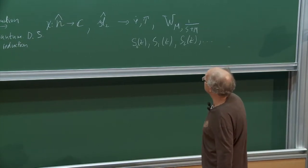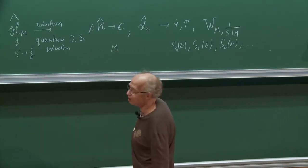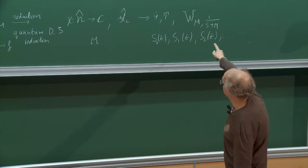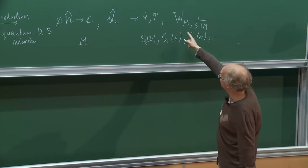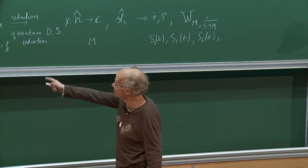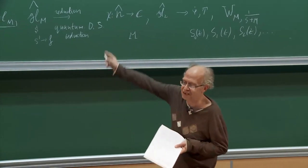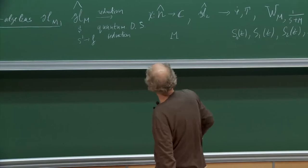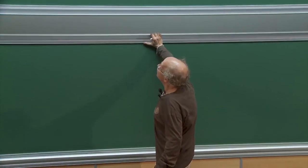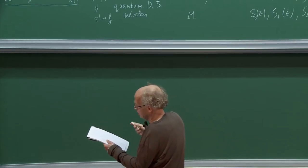These generators satisfy some relations. If you write these relations, you see they depend on the variable M algebraically — meaning we can define some algebra in principle with an infinite set of generators which depend on M algebraically. So we can take M as a complex number. We cannot construct this from GL_M for complex M in the usual way, but such kinds of algebras exist.